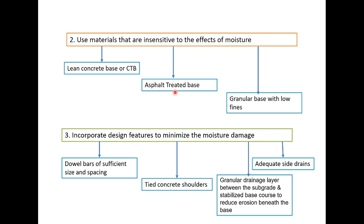In the third approach we use the dowel bars of sufficient size and spacing and this is the most cost effective solution to joint faulting problems. Tight shoulders to keep plain shoulder joint tight or granular drainage layer between the subgrade and stabilized base to reduce erosion beneath the base or it may be providing adequate side drains.